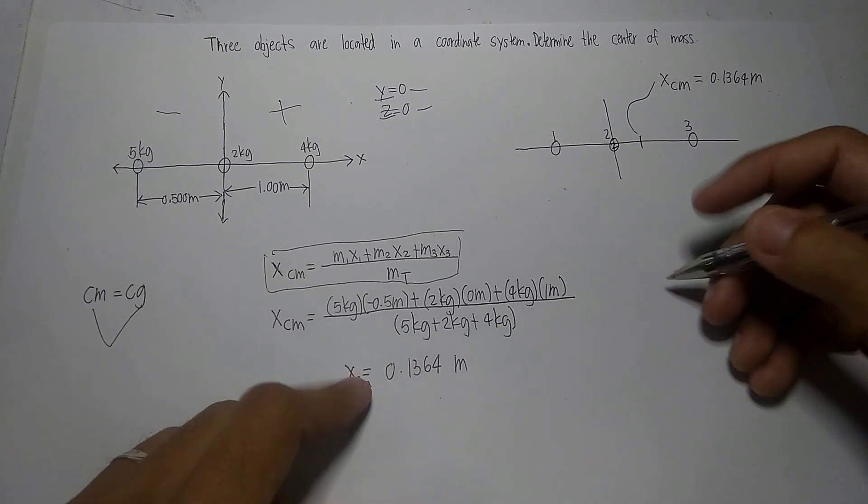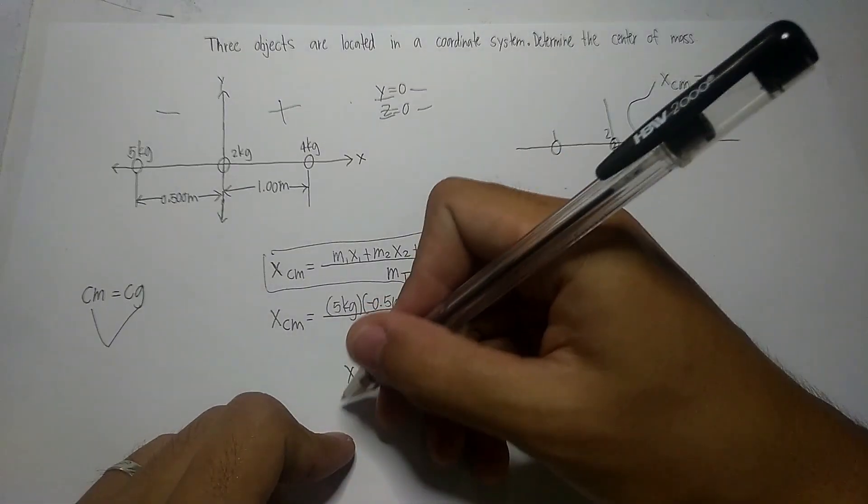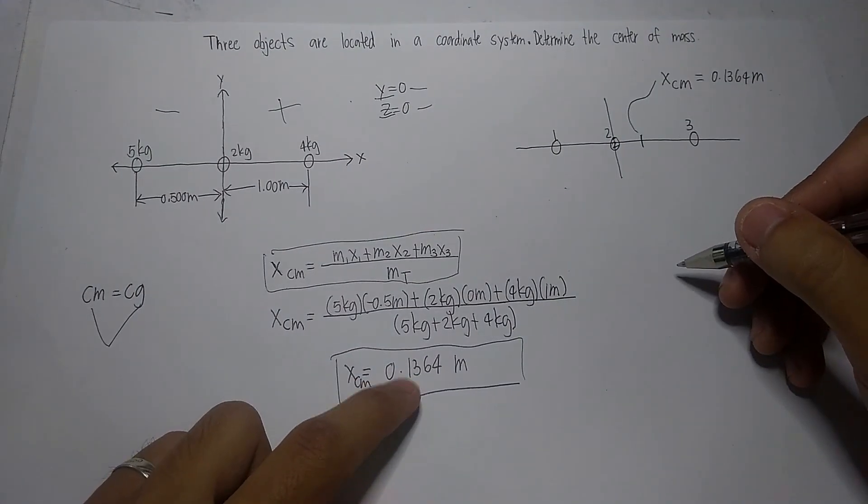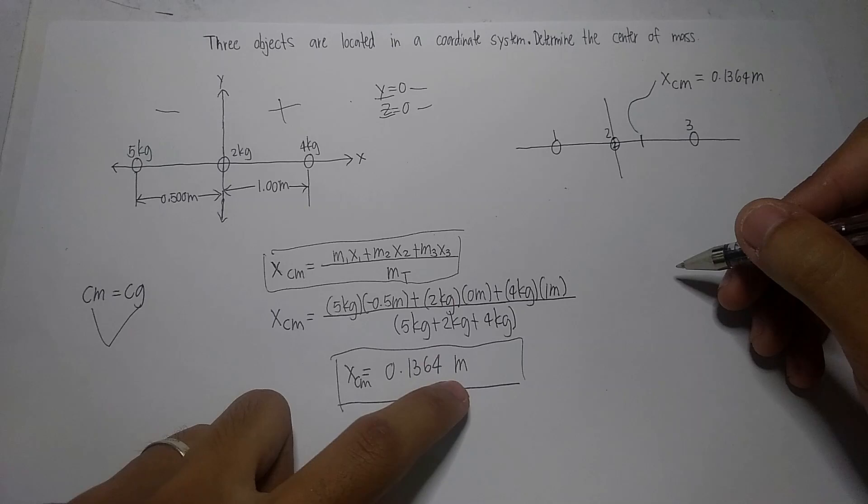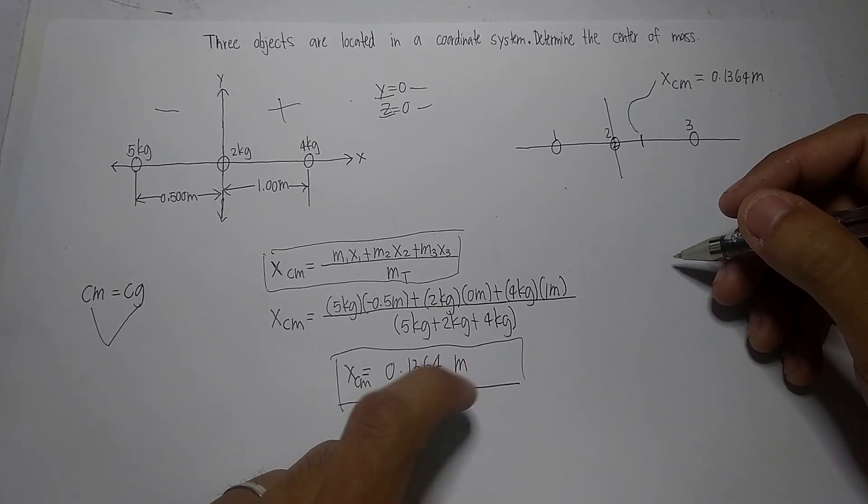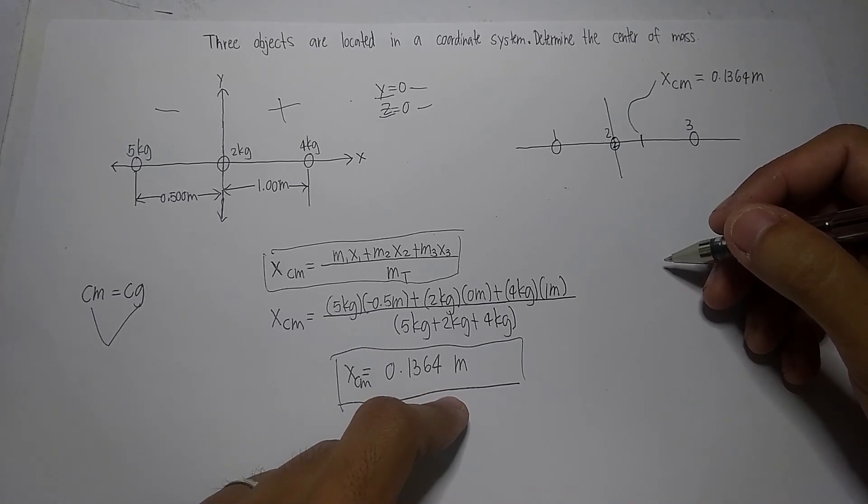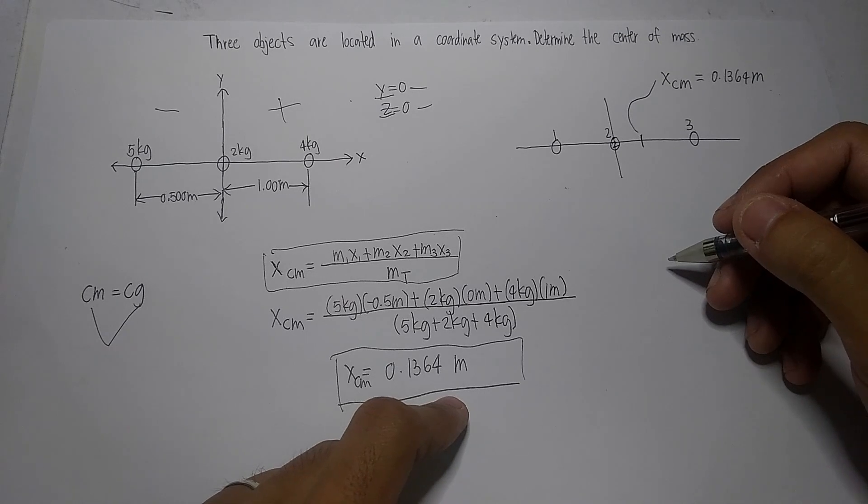By calculating, we will arrive at this value which is 0.1364 meters. So, in interpreting this value, it is situated with respect to the origin we chose to the right.